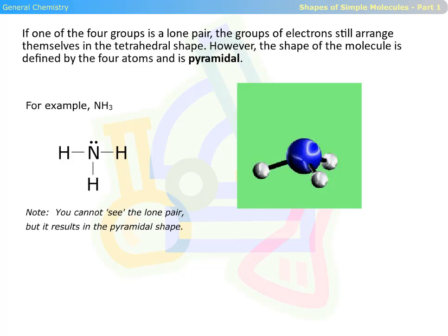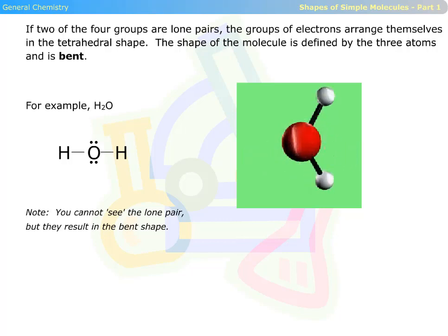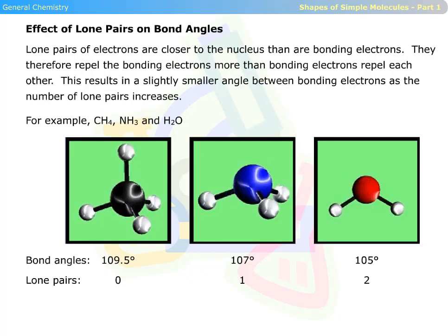If one of the four groups is a lone pair, the groups of electrons still arrange themselves in the tetrahedral shape. However, the shape of the molecule is defined by the four atoms and is pyramidal. If two of the four groups are lone pairs, the groups of electrons arrange themselves in a tetrahedral shape, but the shape of the molecule is defined by the three atoms and is bent. Lone pairs of electrons are closer to the nucleus than bonding electrons, so they repel the bonding electrons more. This results in a slightly smaller angle between bonding electrons as the number of lone pairs increases — as seen in methane, ammonia, and water.